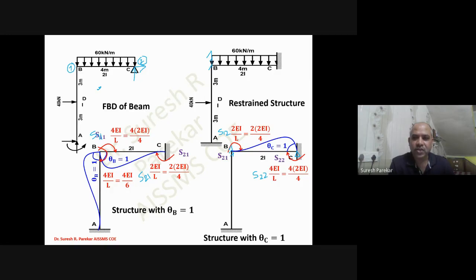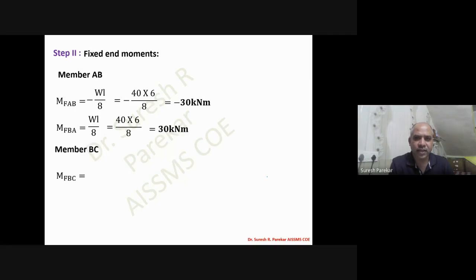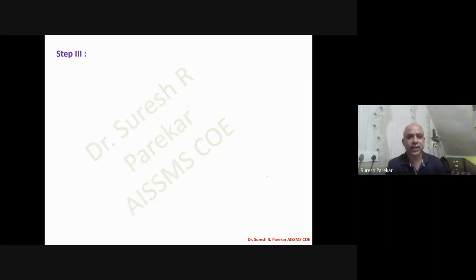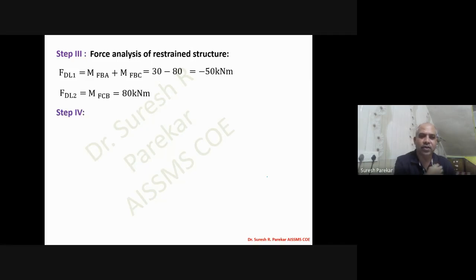Fixed end moments: for AB/BA, minus 30 and plus 30 kN·m; for BC, minus 80 and plus 80 kN·m. FDL1 = MF_BA + MF_BC = minus 50 kN·m. FDL2 = 80 kN·m.